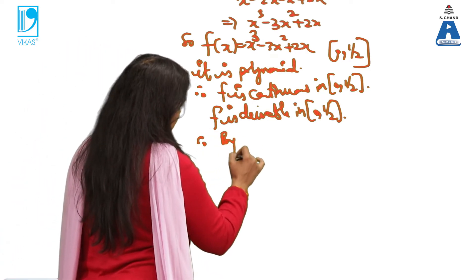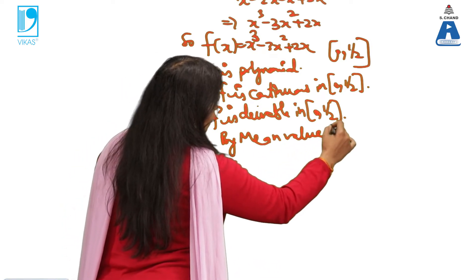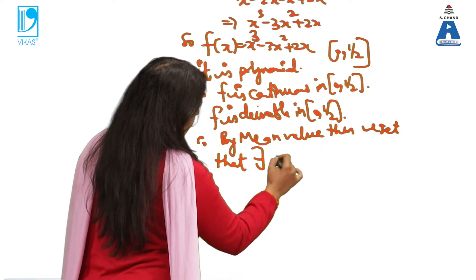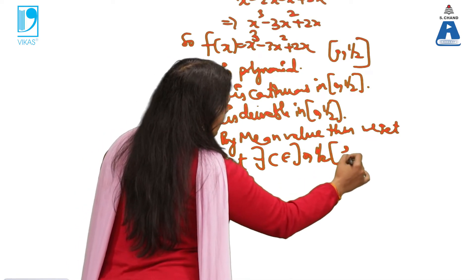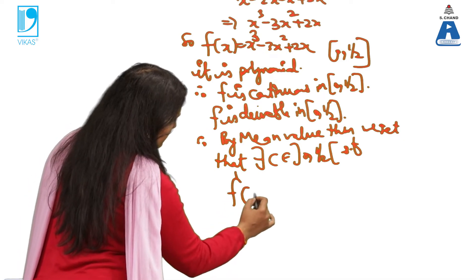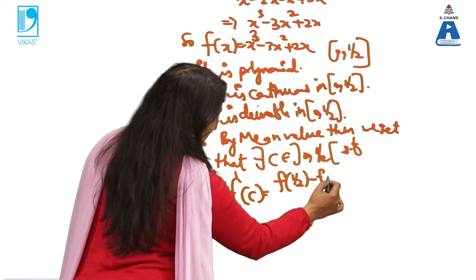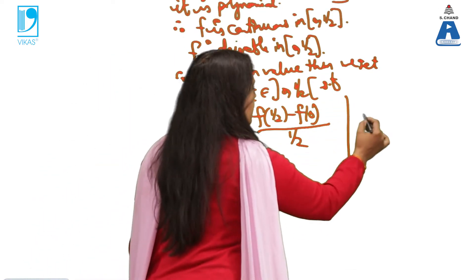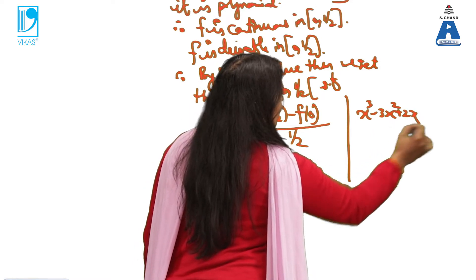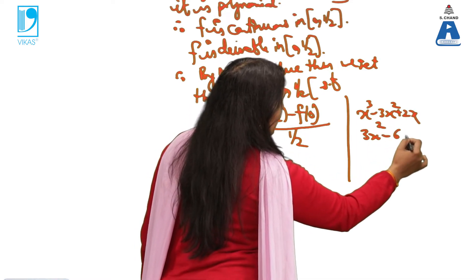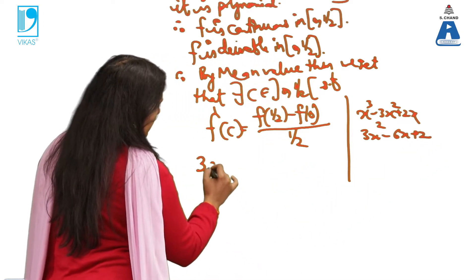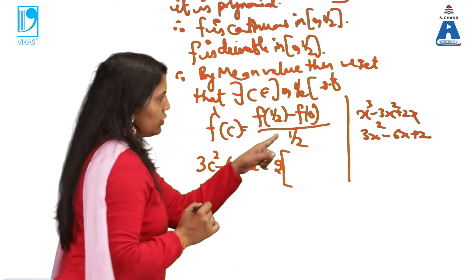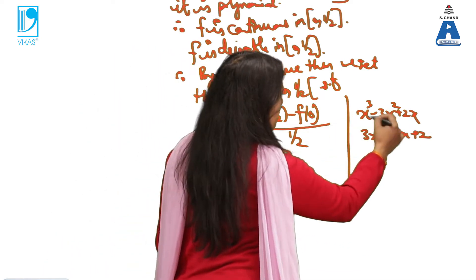By mean value theorem, we get that there exists C belonging to the open interval (0, 1/2) such that the derivative at C is equal to f(1/2) minus f(0) upon 1/2. Now x³ - 3x² + 2x is the function. Derivative will be 3x² - 6x + 2. I write this value. So it is 3c² - 6c + 2 and this is 1/2. So it is basically twice of, because it is in the denominator, twice of f(1/2) I am calculating.